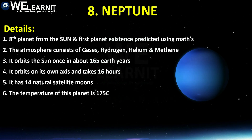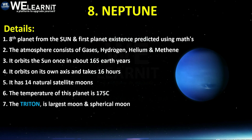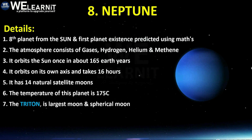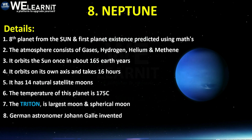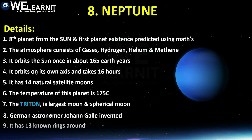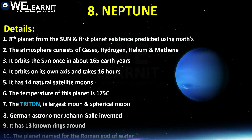The temperature of Neptune is minus 175 degrees Celsius. Triton is the largest and spherical moon of this planet. The German astronomer Johann Galle discovered this planet. Neptune has 13 known rings around it and is named for the Roman god of water.